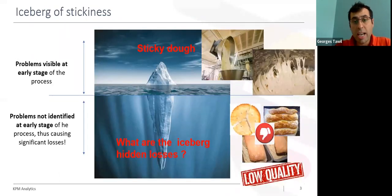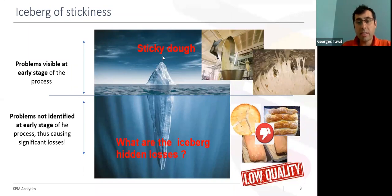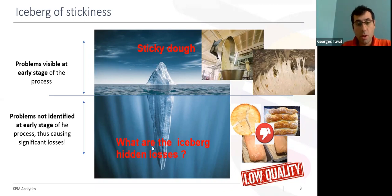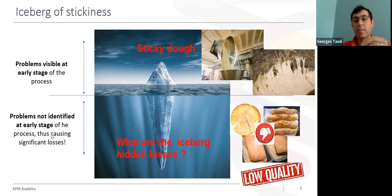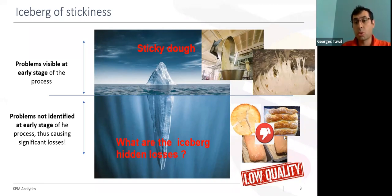When talking about technological challenges in the baking industry, we always think about sticky dough. The reason is that sticky dough is a visible problem appearing early in the production. However, you need to know that there are many other technological challenges. They appear later in the production and also have significant cost and impact that the baking industry must deal with.